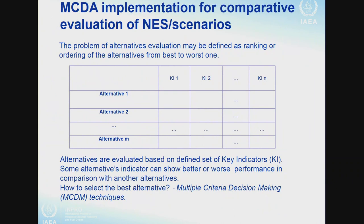What does the task look like? The problem of alternative evaluation may be defined as a ranking of alternatives from the best to the worst. You see here alternative one, two, and M. These alternatives are evaluated based on a defined set of indicators: key indicator one, key indicator two, key indicator N. In principle, some alternative indicators can show better or worse performance compared to other alternatives, so the question is how to select the best alternative.